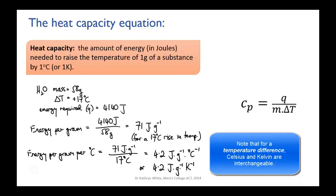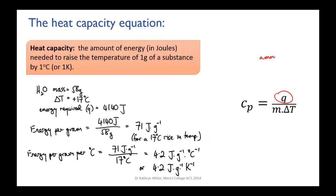And that actually gives us the equation for heat capacity. You take the amount of energy and you divide it by the mass of the substance and the change in temperature.